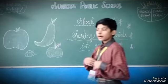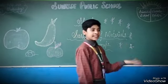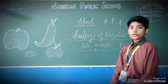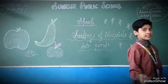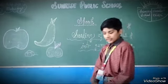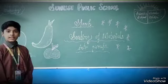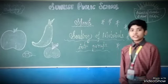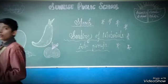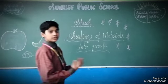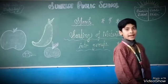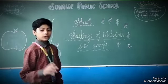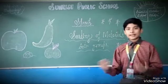Now we talk about conductors. There are two types of conductors: good conductors and bad conductors. A good conductor is one that allows heat to pass through it easily. A bad conductor is one that does not allow heat to pass through it easily.